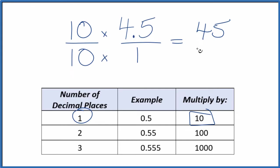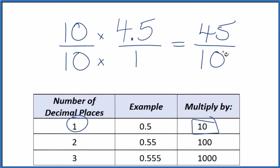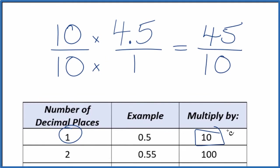So 10 times 1 is 10. And now we have a fraction. This is an improper fraction, and we can simplify it some. But 4.5, that's equal to 45 over 10. Let's give ourselves some room.